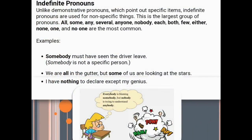Next type is indefinite pronouns. Unlike demonstrative pronouns which point out specific items, indefinite pronouns are used for non-specific things. This is the largest group of pronouns. All, some, any, several, anyone, nobody, each, both, few, either, none, one, and no one are the most common. Examples: somebody must have seen the driver leave — somebody is not a specific person. We are all in the gutter, but some of us are looking at the stars — all and some are indefinite pronouns. I have nothing to declare except my genius — nothing shows a non-specific thing.